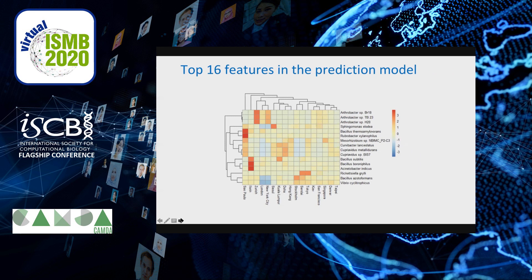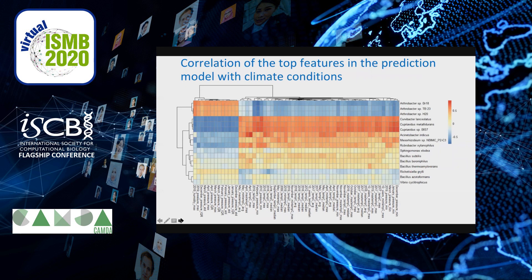The graphs produced from this study are two very important ones. The first shows how the top 16 selected features in the prediction models are related to bacteria and the origin of samples by cities — less exact features are shown in blue, and high-accuracy features in red. The second, more interesting graph shows Spearman correlation of the top features in the prediction model with particular climate conditions such as humidity, temperature, and precipitation. Conditionally, these graphs can be divided into four layers, where the blue level has negative correlation and the red level has high positive correlation.